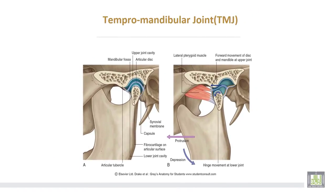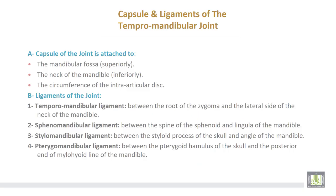The temporomandibular joint, TMJ. This is the head of the mandible from below, and this is the mandibular fossa of the skull from above. And this is the intra-articular disc. The muscle which enters the space of the joint is the lateral pterygoid muscle, to reach the intra-articular disc.